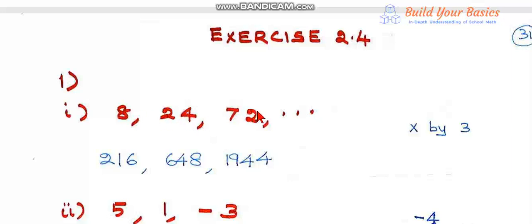Looking at the pattern now, 3 times 8 equals 24, 24 times 3 equals 72, so 72 is got by multiplying 24 by 3, and 24 is got by multiplying 8 by 3.